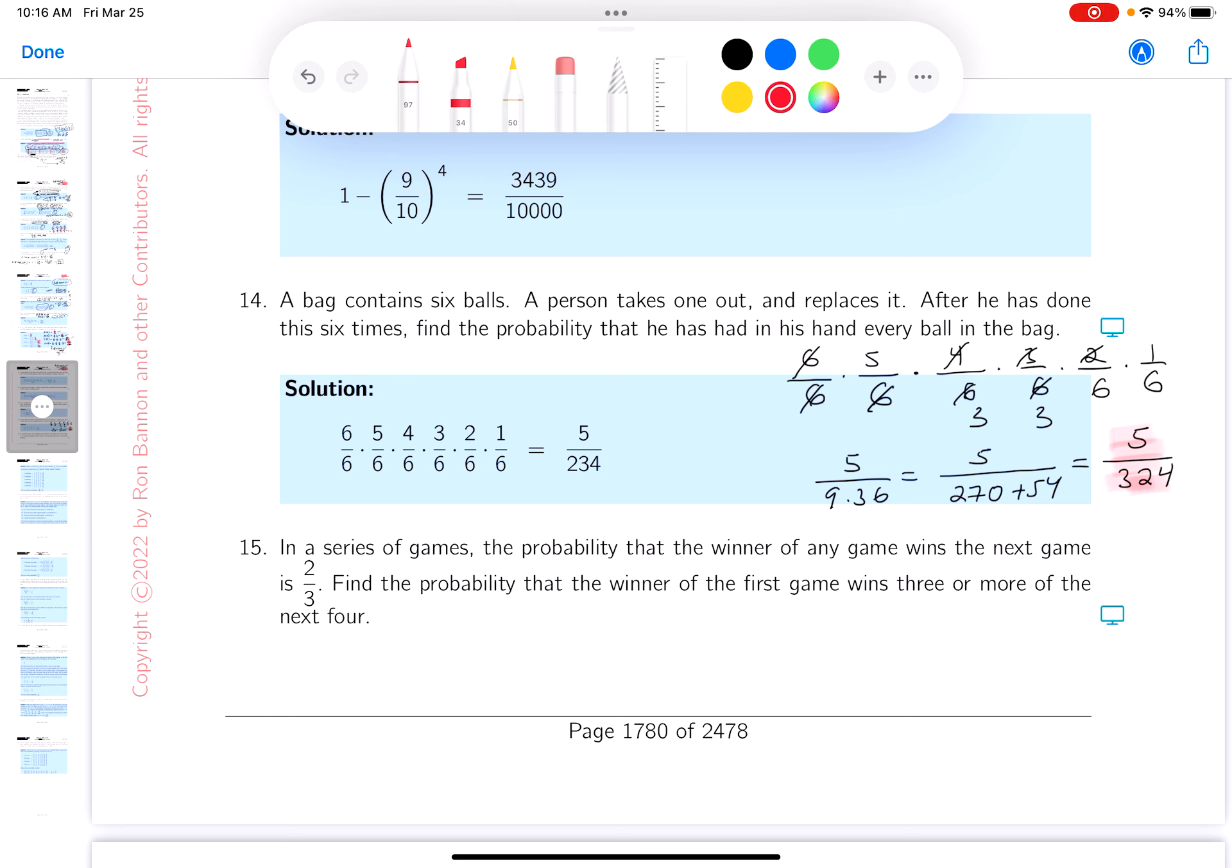Six over six, five over six, four over six, three over six, two over six, one over six. And I'm going to reduce. All right. Three times two, three times two, that's six. Four is two times two. So that would be three. And that would be three. What are you left with on top? Five. I agree with that. And on bottom, I get nine times 36.